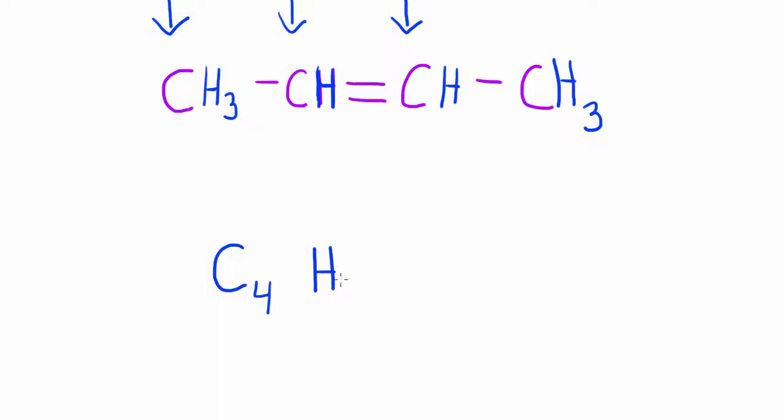And then for the H how many hydrogens do we have? We have eight. So we put eight as a subscript beside the hydrogen. And then the formula for 2-butene would be C4H8. And then we're done.